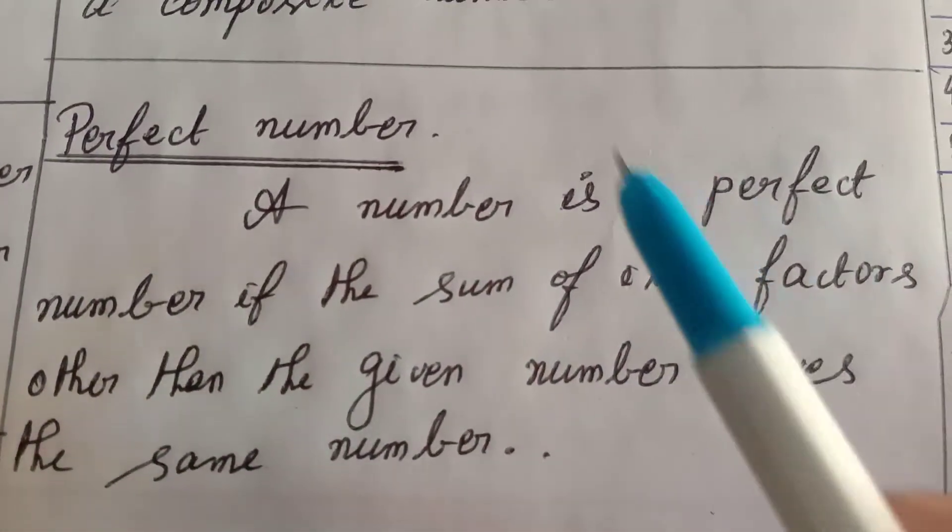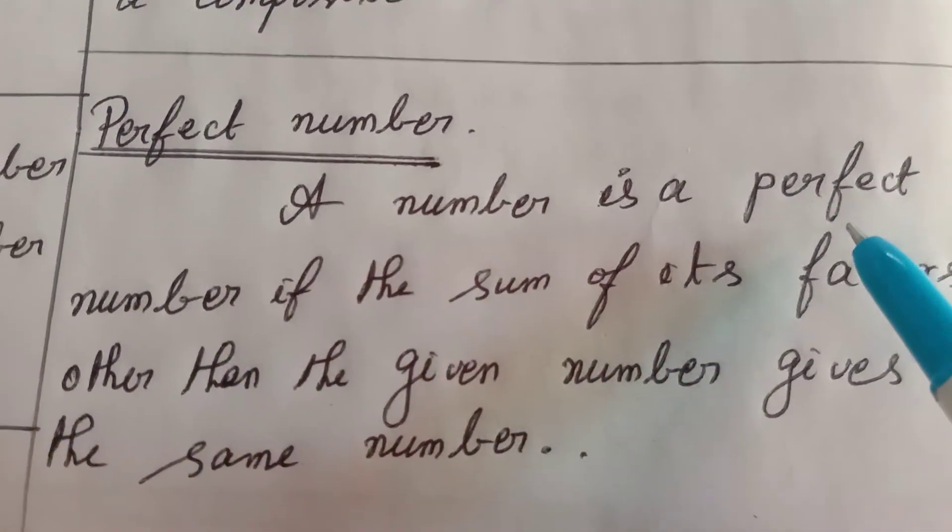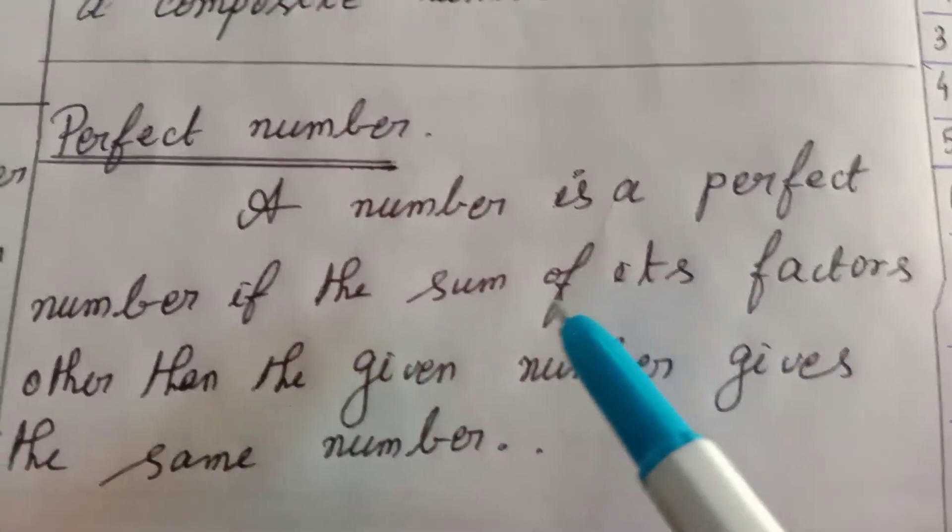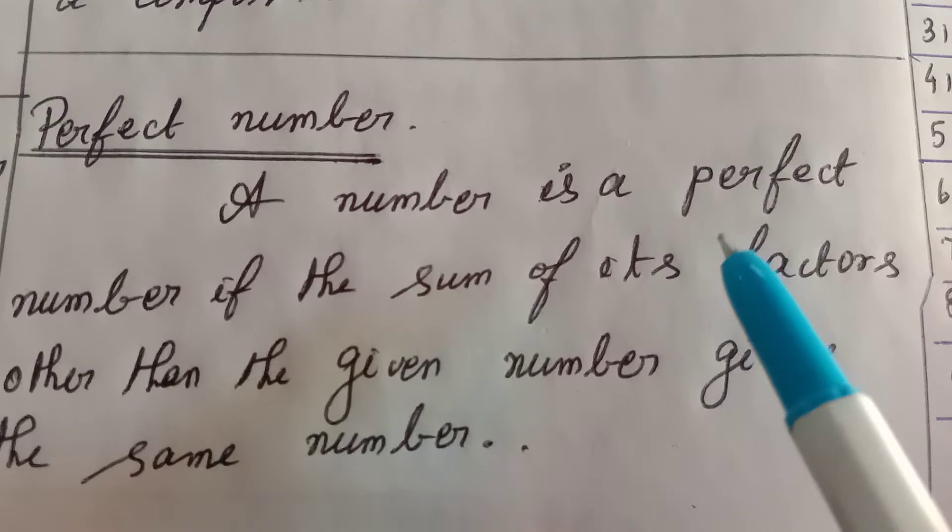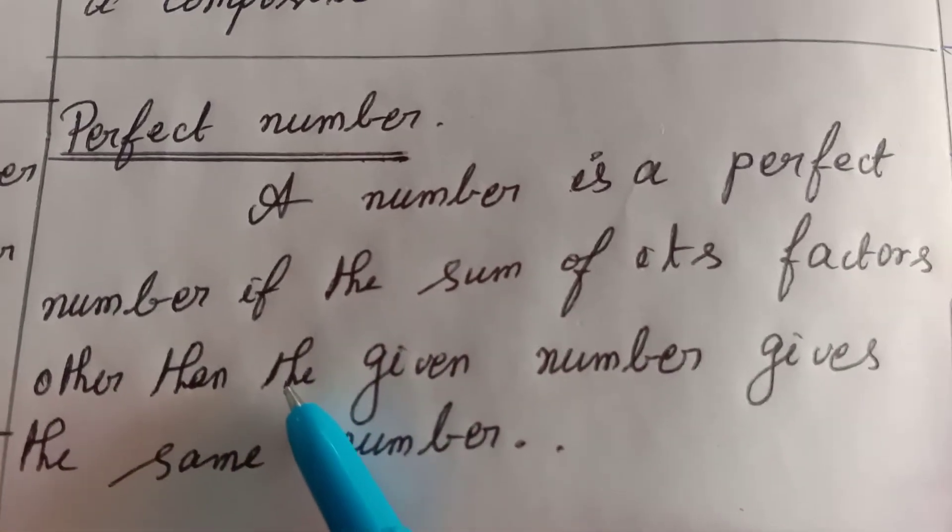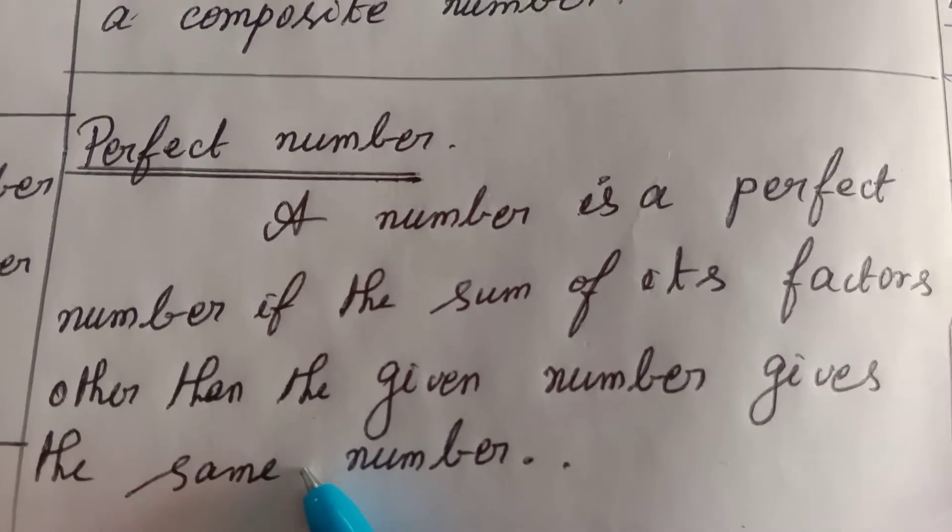A number is a perfect number if the sum of its factors other than the given number gives the same number. So first you have to find the factors of a given number.